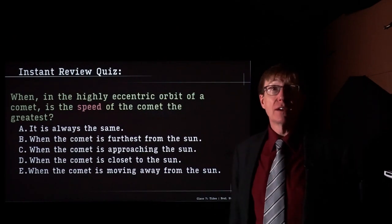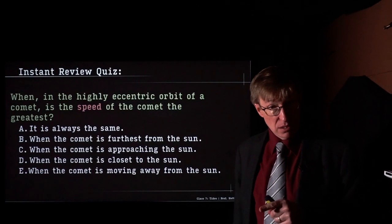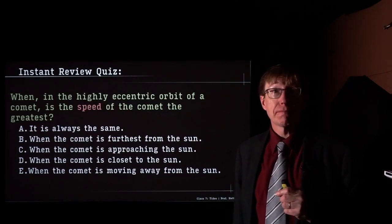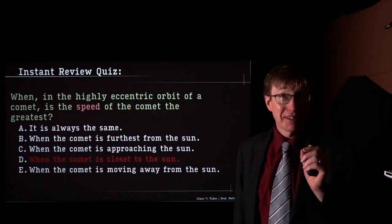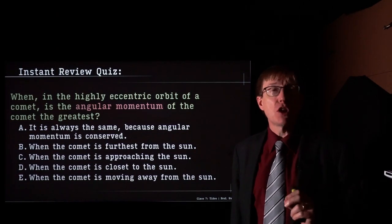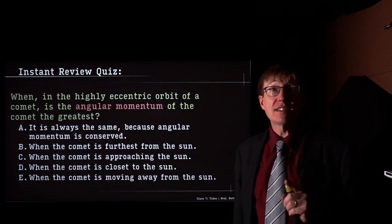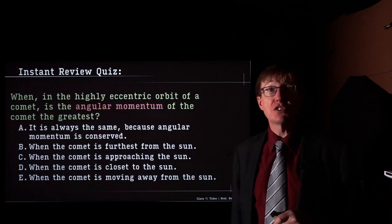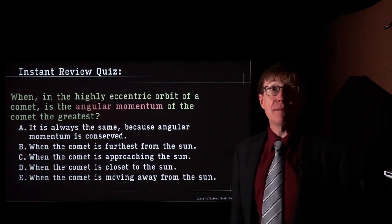The answer is D — when the comet is closest to the sun, that's when the speed is greatest. That's actually Kepler's second law. Next question: when in the highly eccentric orbit of a comet is the angular momentum of the comet the greatest? The answer is A — it's always the same, because angular momentum is conserved.